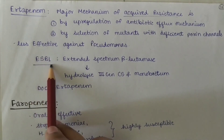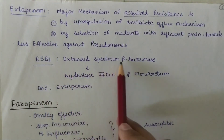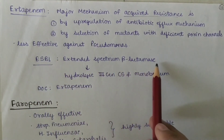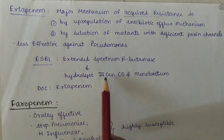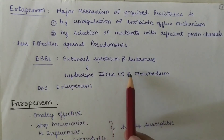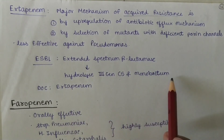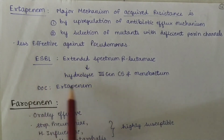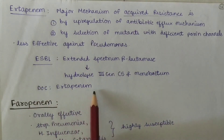ESBL — what is ESBL? It is extended-spectrum beta-lactamases, which hydrolyze third-generation cephalosporins and monobactams. For ESBL-producing organisms, the drug of choice is Ertapenem.